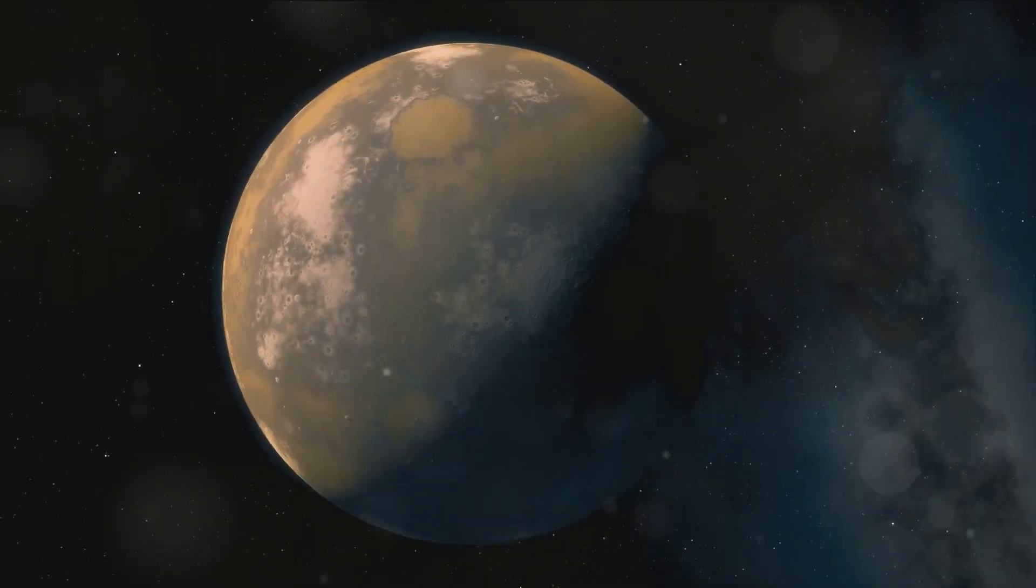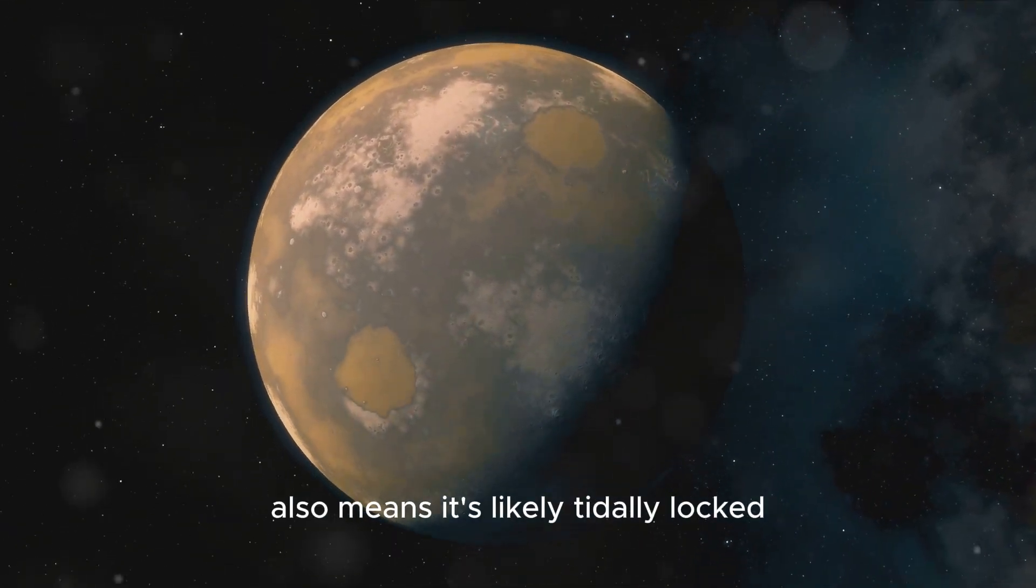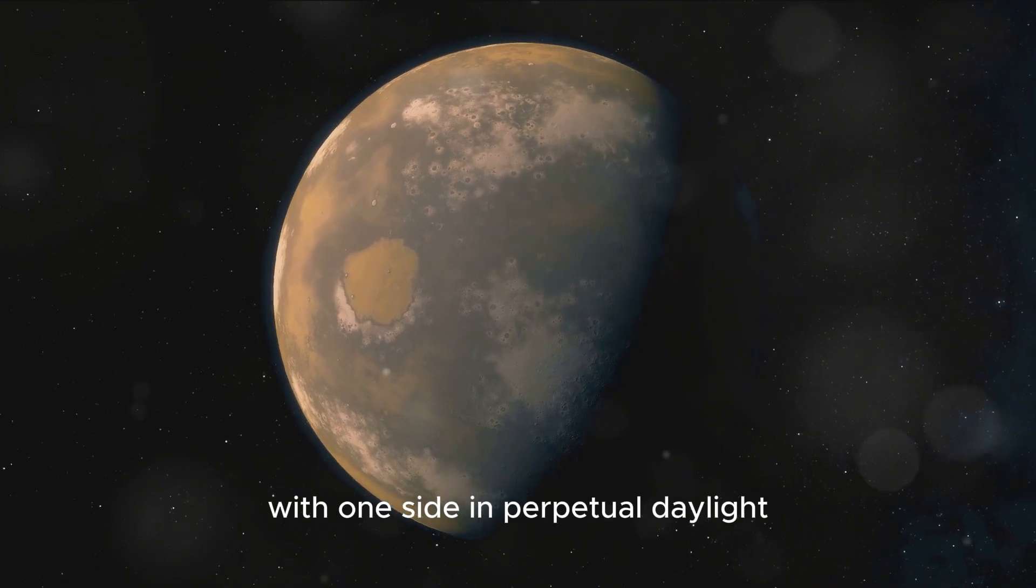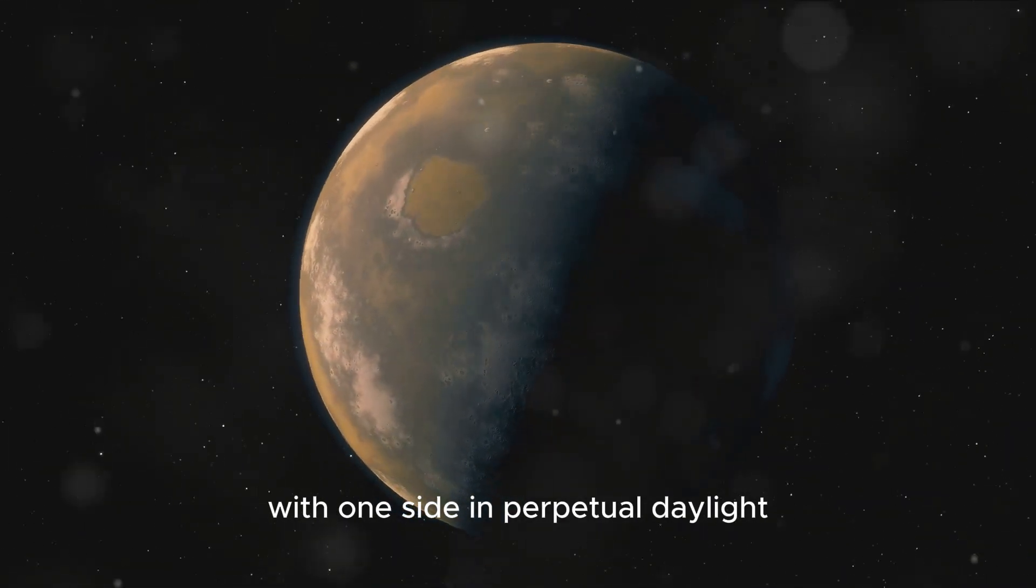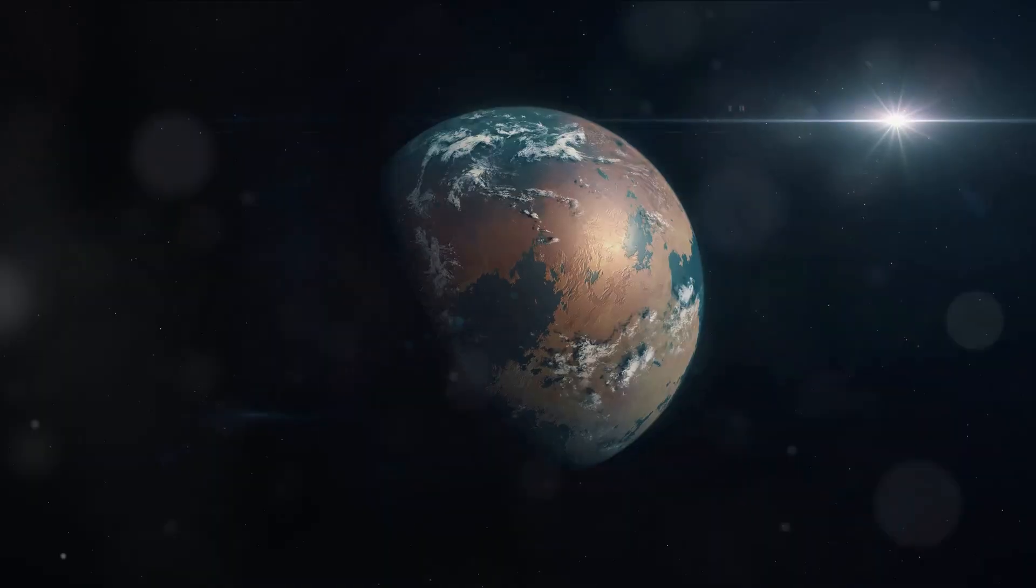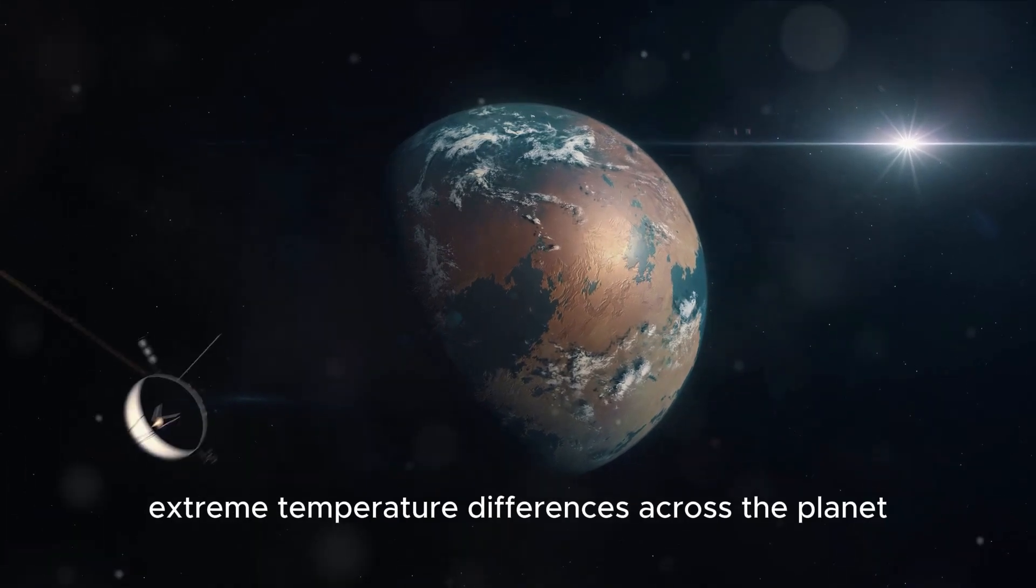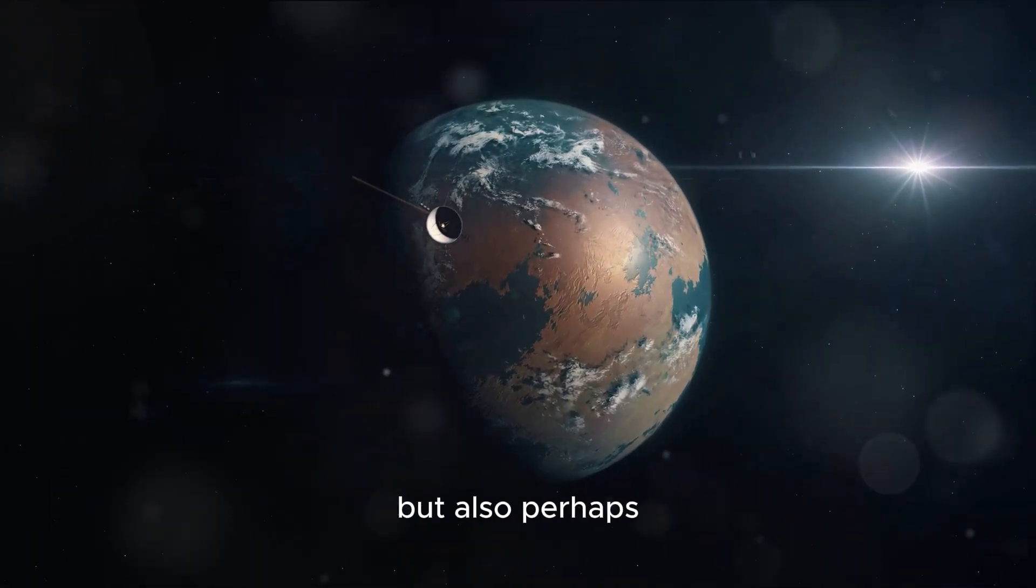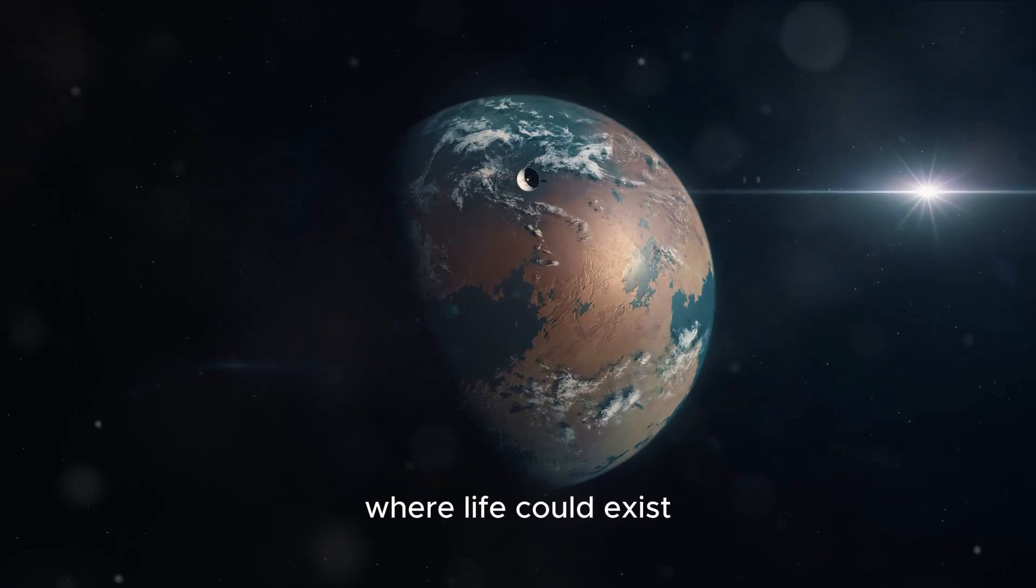However, Proxima Centauri b is not without its challenges. Its proximity to its star also means it's likely tidally locked, with one side in perpetual daylight and the other in endless night. This could create extreme temperature differences across the planet, but also perhaps areas of moderate climate where life could exist.